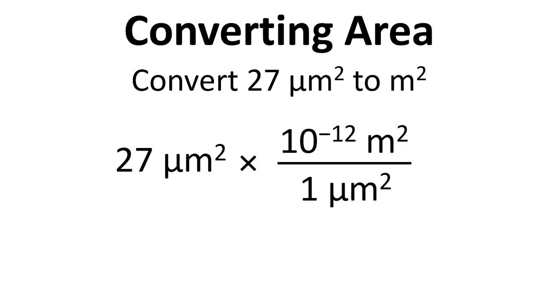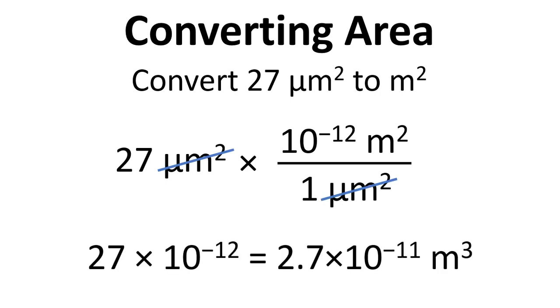That gives us 10 to the minus 12 m² for every 1 micrometer squared. When we cancel those out and work everything out, we get 2.7 times 10 to the minus 11 m². That should be squared, not cubed.